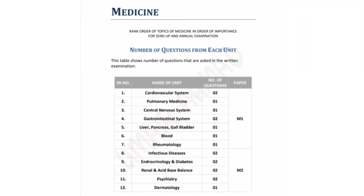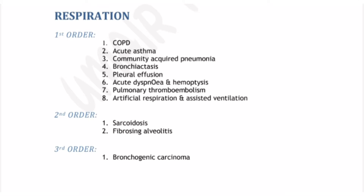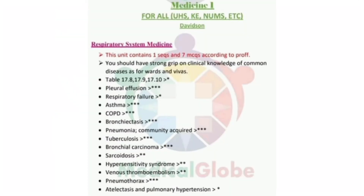Assalamu alaikum. This is the table of specification for Medicine 1 and 2. These are the rank order topics for respiration. The first order topics are the most important ones, and this is the guideline for the respiratory system in medicine.